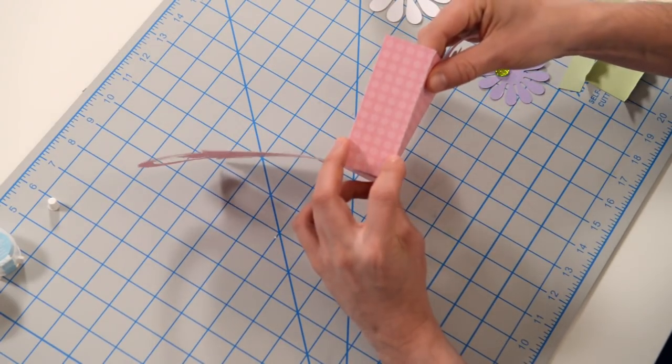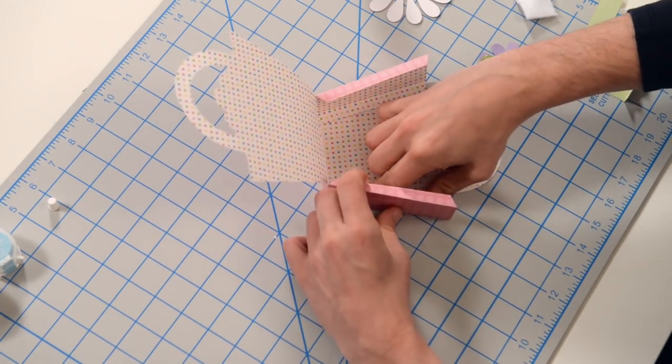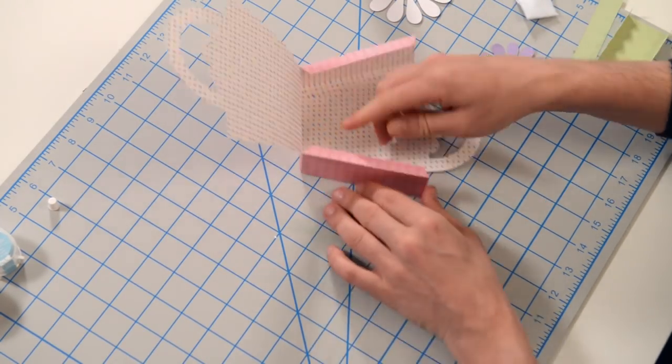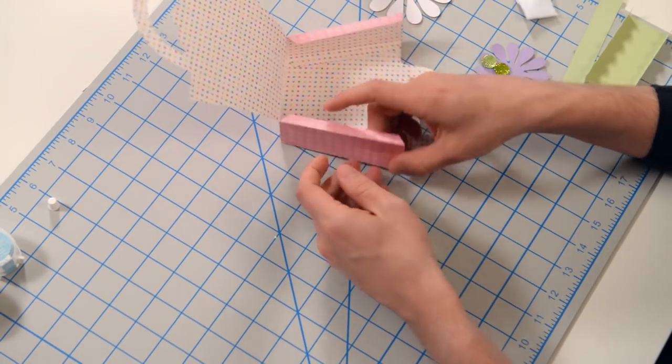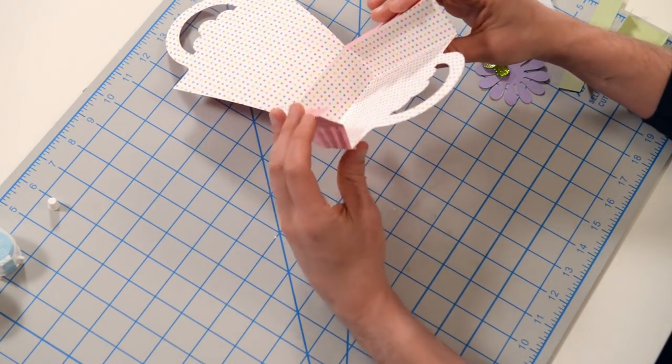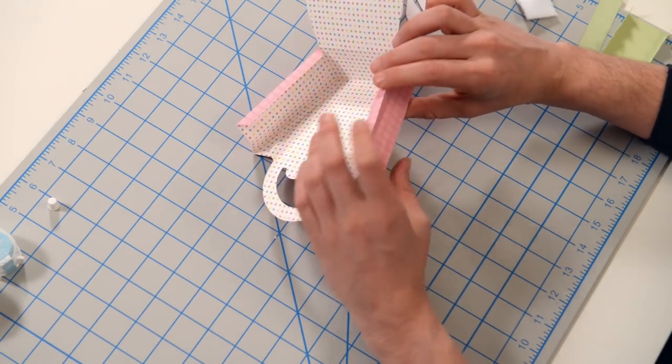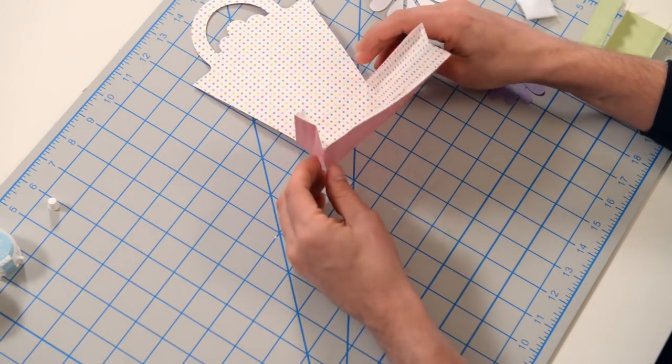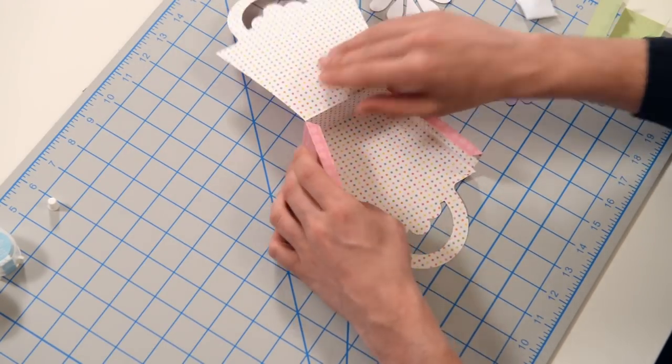Once you do, you can put it flat down on your table and push down to close it up. Make sure that you get it nice and aligned. You'll also notice that there's a little bit of a score mark here right on the side and that's so that this thing actually can kind of fold in a little bit, so it looks more like a bag instead of just being completely boxy.